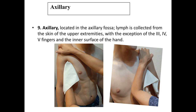Next are axillary lymph nodes, located in the axillary fossa. Lymph is collected from the skin of the upper extremities with the exception of the third, fourth, and fifth fingers and the inner surface of the hand. To correctly palpate the axillary lymph nodes: with one hand you fix the shoulder of the inspected side, and with the other hand you go directly into the armpit, press the lymph nodes to the chest, and palpate with the fingertips. To prevent slipping, you may use a napkin or the patient's clothing.